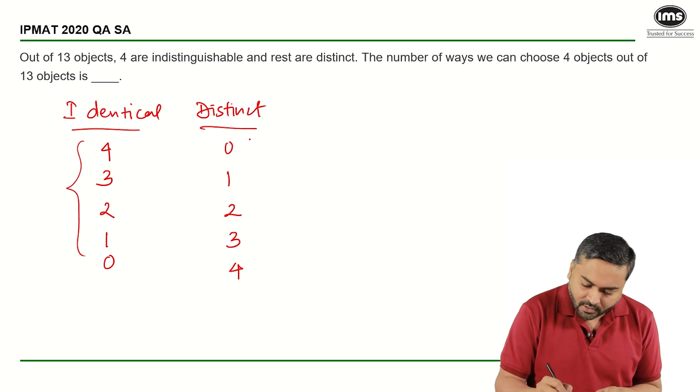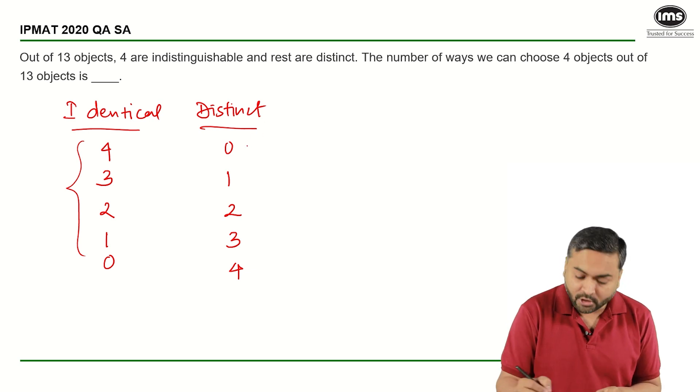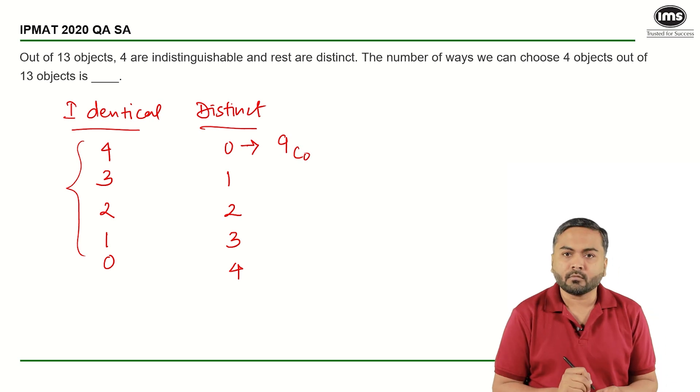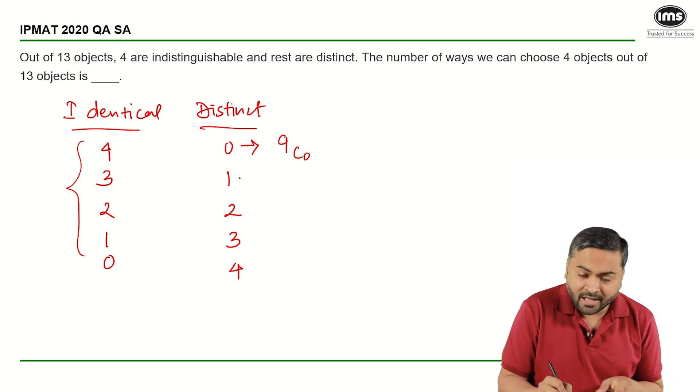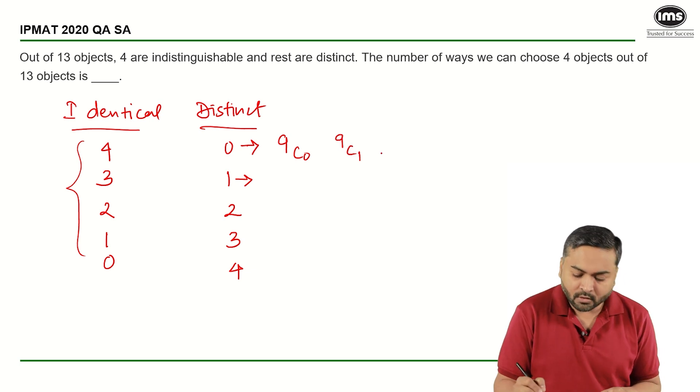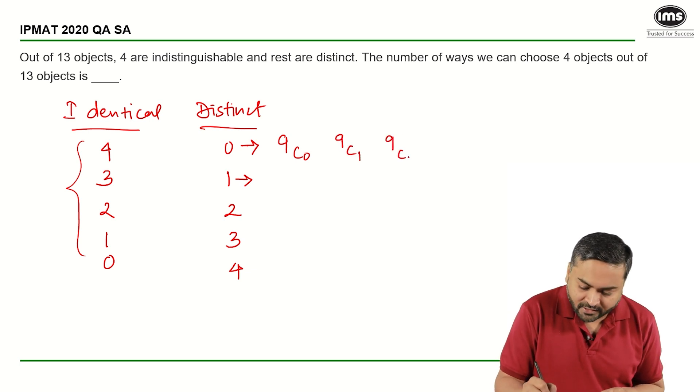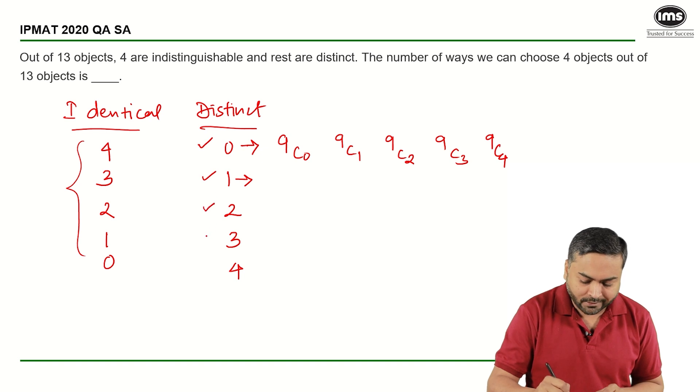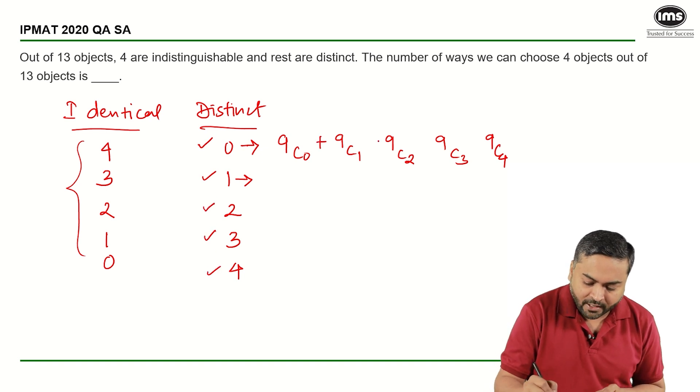If I see here, out of 9 I have to select 0, so that can be done in 9C0 ways. Then out of 9 I have to select 1, so that can be done in 9C1 ways. Then 2 objects in 9C2 ways, then 3 objects in 9C3 ways, and then 4 objects in 9C4 ways. So either it is this case or this case or this case or this case - this case or this case, basically we are looking at addition.